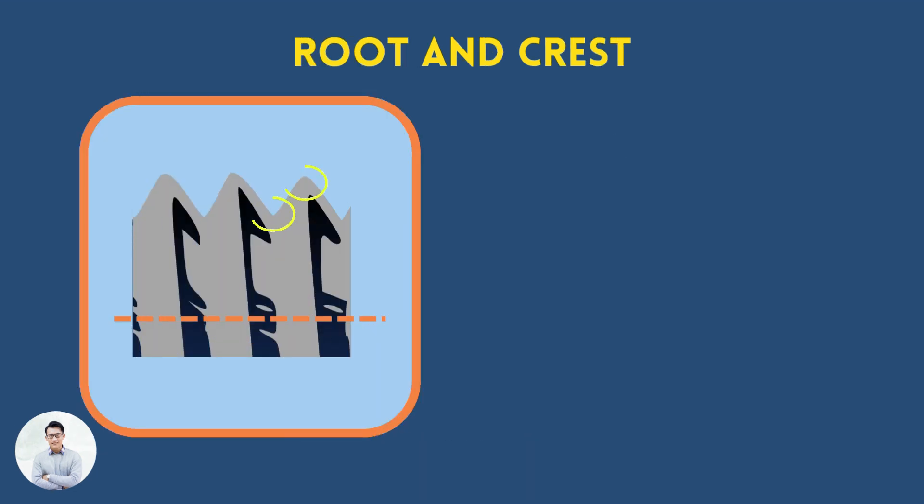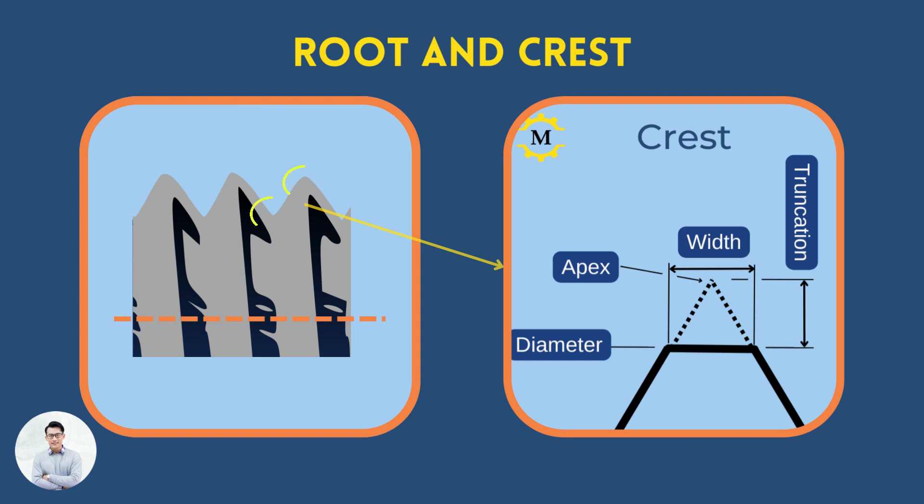The root and crest are flat or rounded surfaces connecting the flanks of a thread profile. The width depends on the amount of tip truncation, which is defined by the specific thread standard.